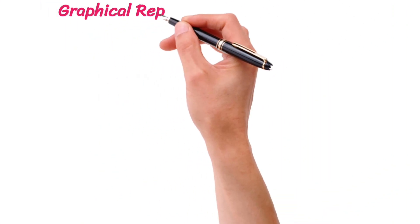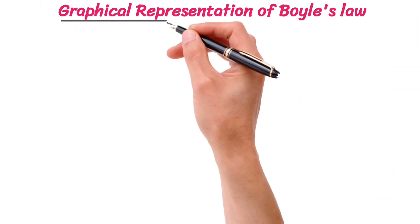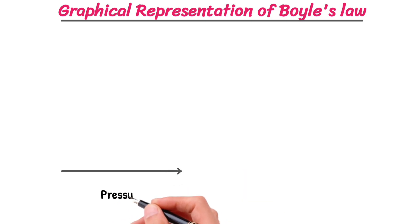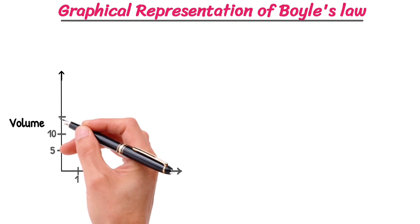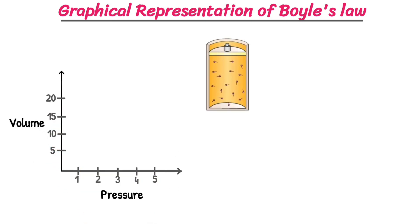Let me teach you the graphical representation of Boyle's law. Let's set up our graph. On the x-axis, we have pressure. And on the y-axis, we have volume. Imagine we have gas in a closed container with a movable piston.